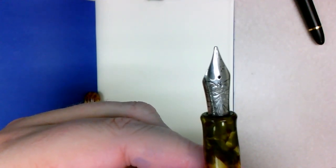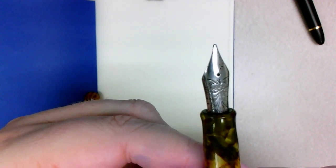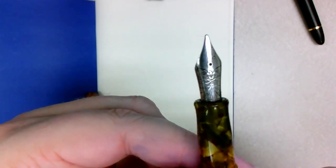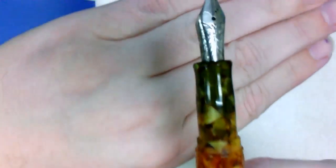I have a Mimasign stub, one of their smaller stubs. This is, I want to say, a 0.8 millimeter nib. But you can see that Mimasign has those nice engravings.